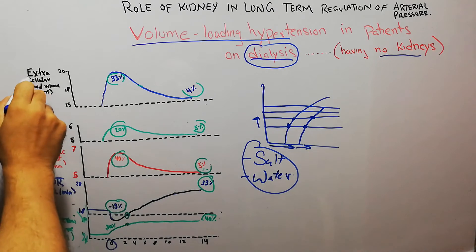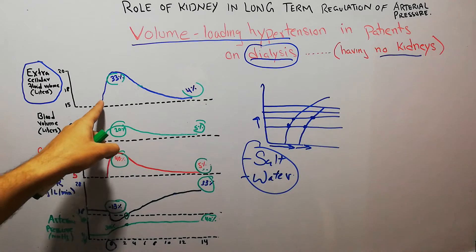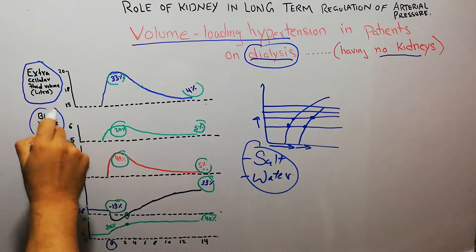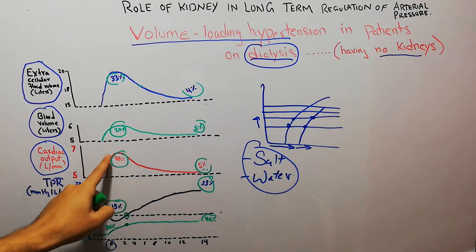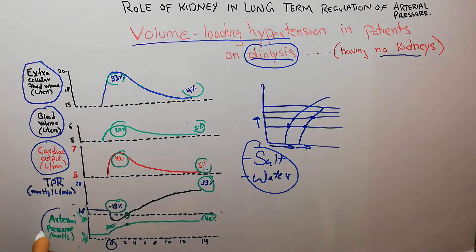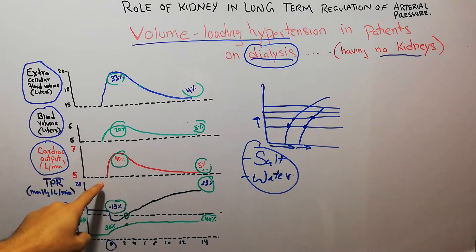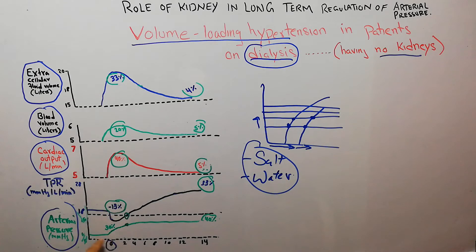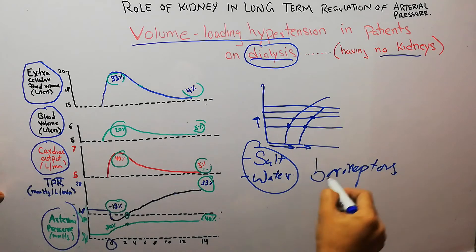Initially, there will be accumulation of extracellular fluid volume. Then blood volume will start increasing, followed by an increase in cardiac output. At this point, total peripheral resistance will initially decrease due to baroreceptors, but arterial pressure will begin to increase at the exact point where extracellular fluid volume, blood volume, and cardiac output start rising.